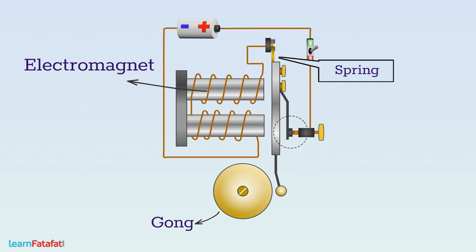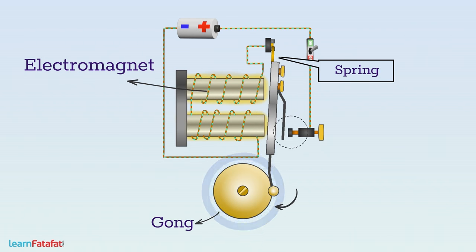That is, again in contact with the screw. Again the circuit is closed and the electromagnet attracts the iron strip. Again sound is produced. This continues as long as the bell button is pressed.